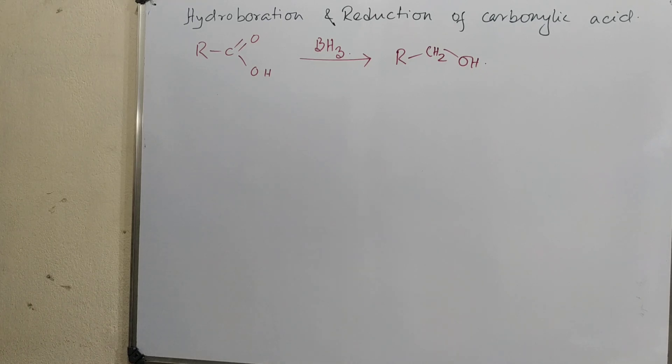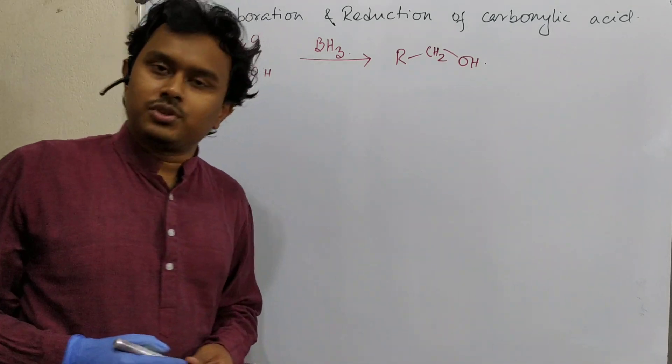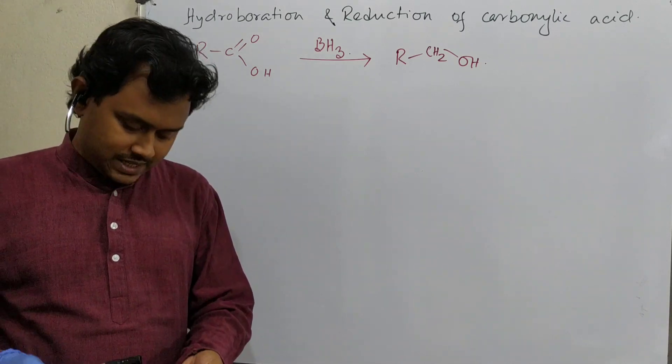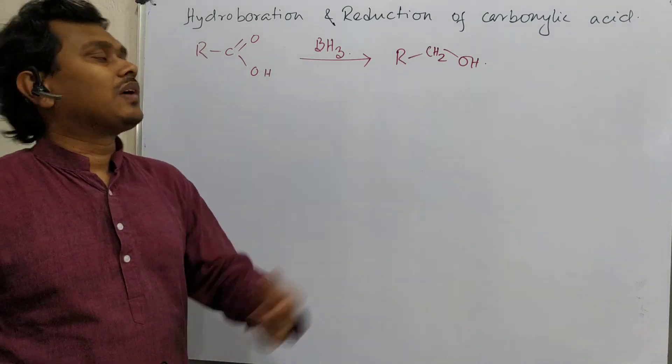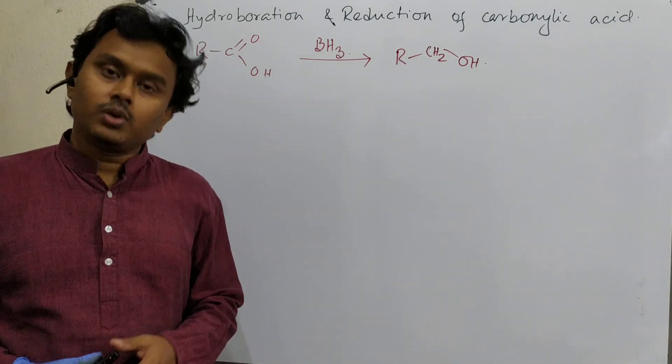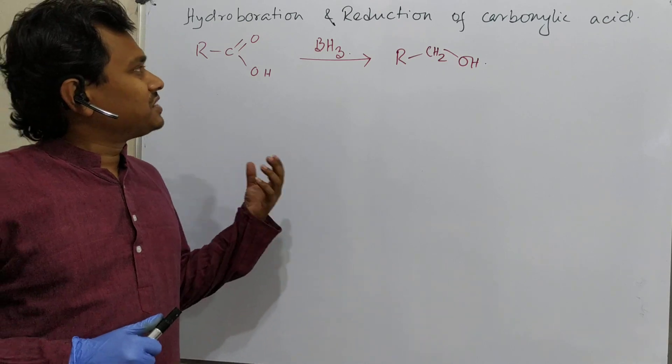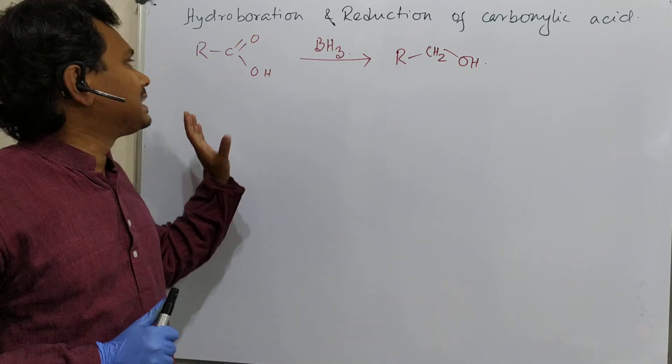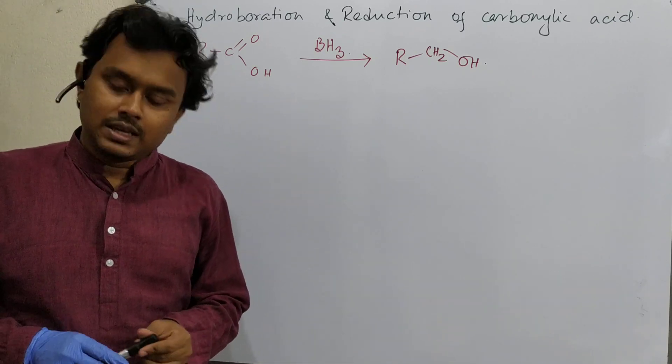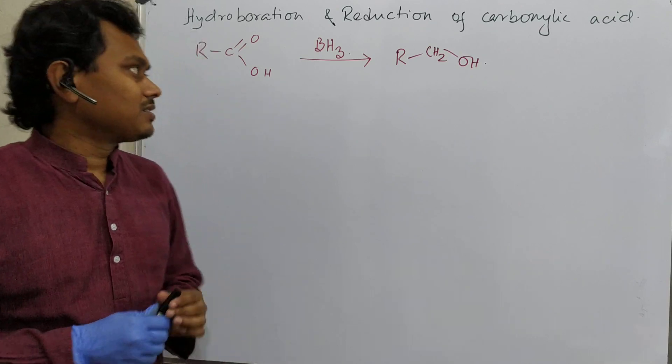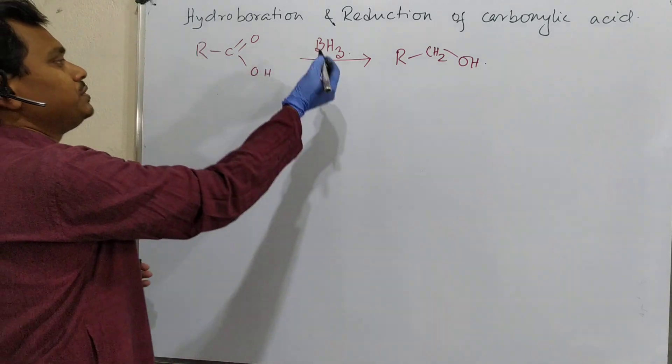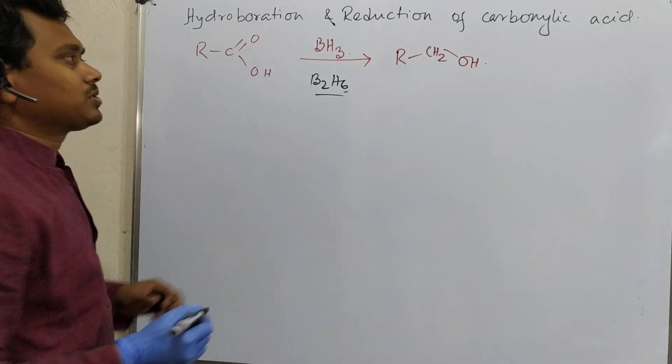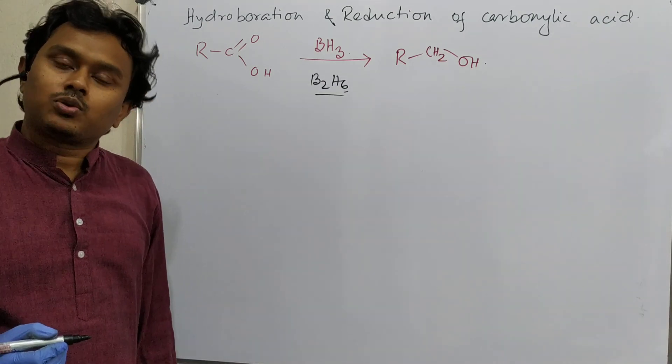Hello students, I am Dr. Tanmay Bhishwash and welcome you all to my channel Chemistry: The Mystery of Molecules. Today we are going to discuss a very short but interesting topic: hydroboration reaction of carboxylic acid. We will compare the reactivity of carboxylic acid versus esters. As you can see, in presence of BH3 or better to say B2H6, reaction of carboxylic acid produces a primary alcohol. Question: how?